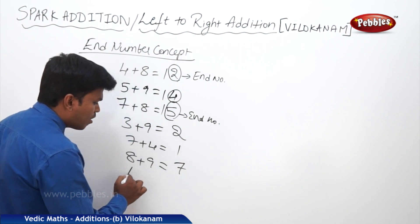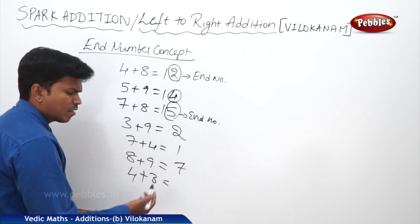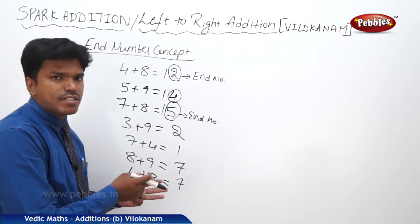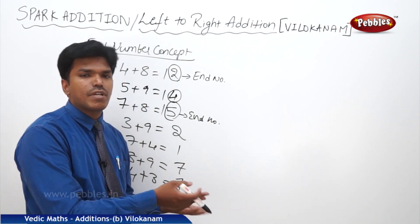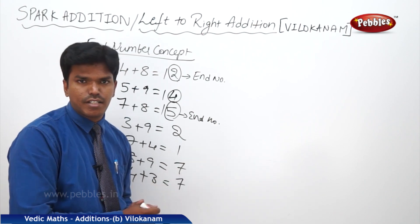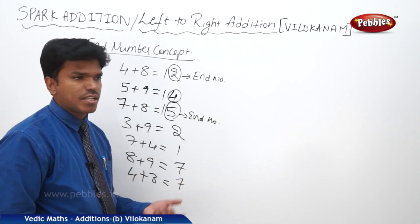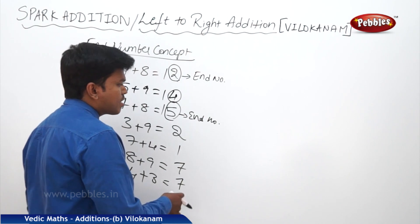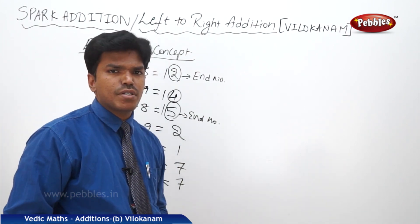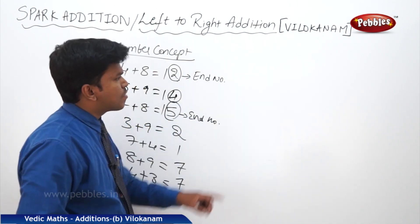What is 4 plus 3? That gives only 7, so that digit itself is the end number. So the end number of 4 plus 3 is 7. We will see the uses of end numbers in the coming concepts.